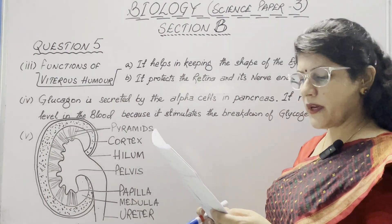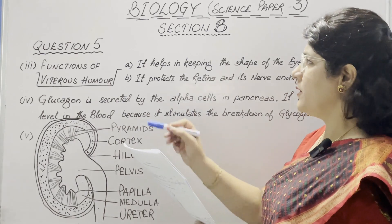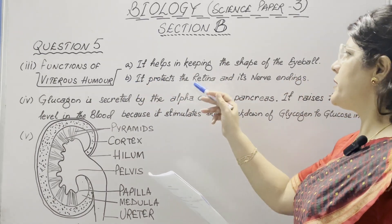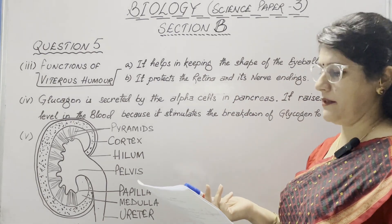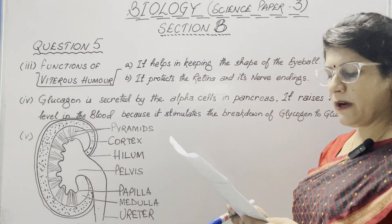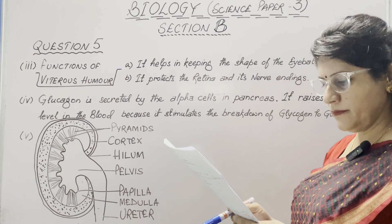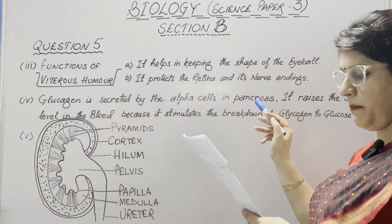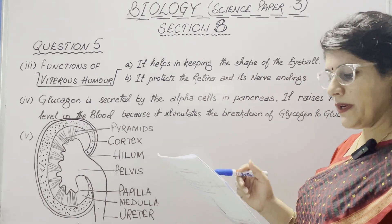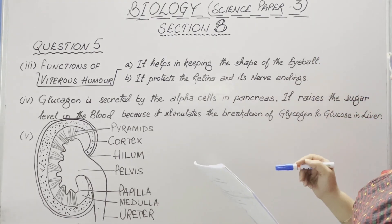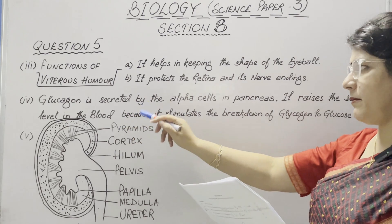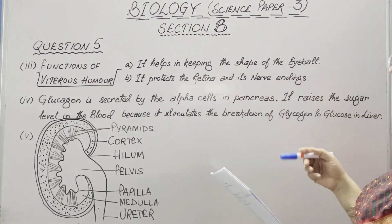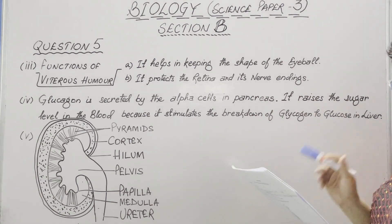In the third part, state two functions of vitreous humor. It helps in keeping the shape of the eyeball, and it protects the retina and its nerve endings. In the fourth part, which gland secretes glucagon? Glucagon is secreted by the alpha cells in our pancreas. Its effect on blood sugar level is that it raises the sugar level in the blood because it stimulates the breakdown of glycogen to glucose in our liver.